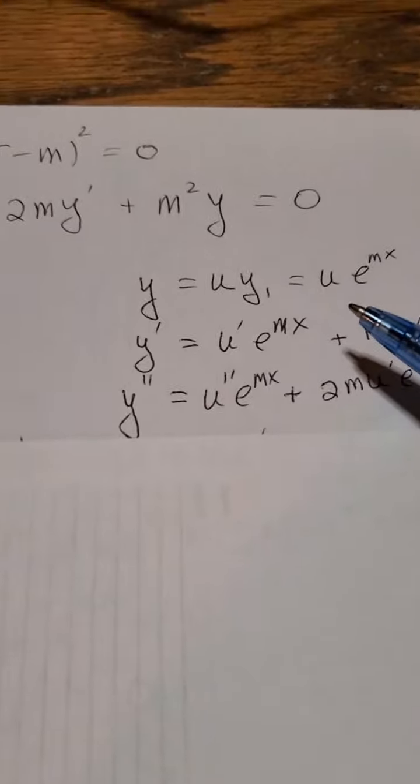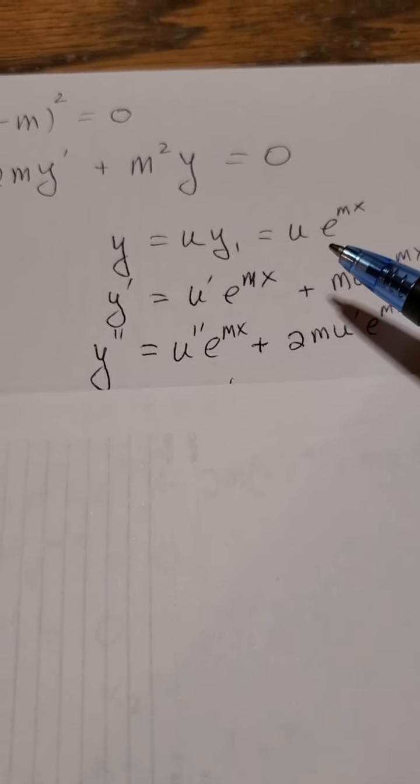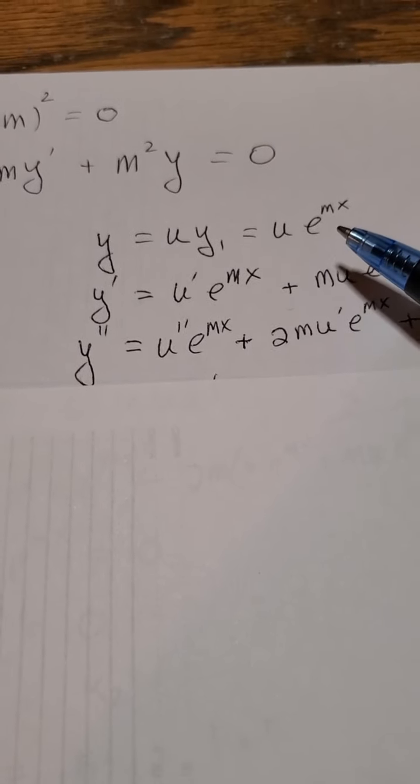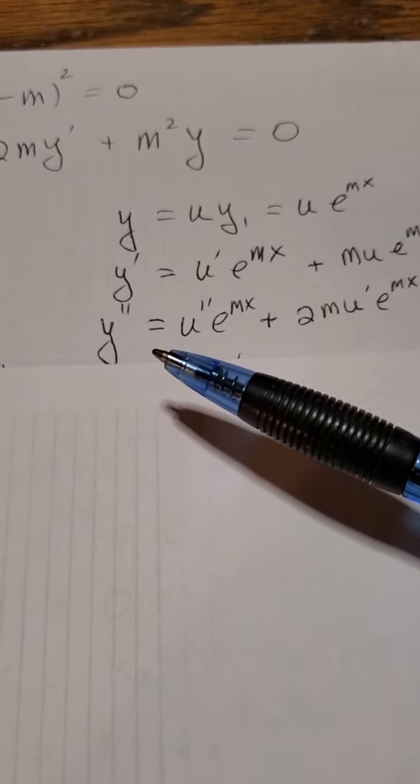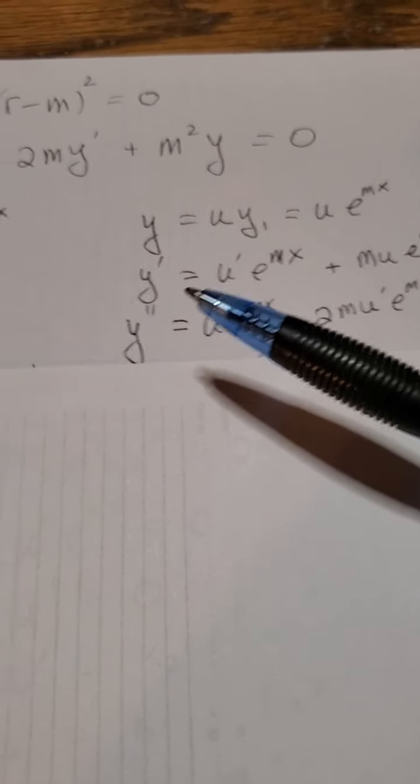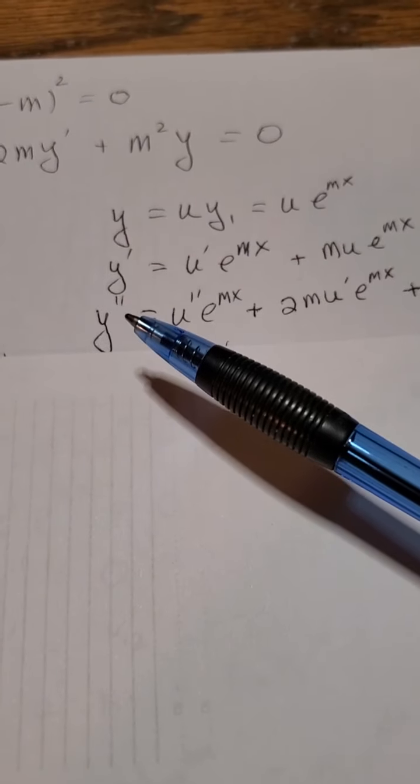If you don't believe me, plug it in. That's definitely a solution. And variation of parameters tells us that y is equal to u times y1, and we have to find the mystery u. So y is equal to u times y1, which is in this case equal to u times e to the mx. Now what I'm going to do is I'm going to take the derivative and then I'm going to take the second derivative.